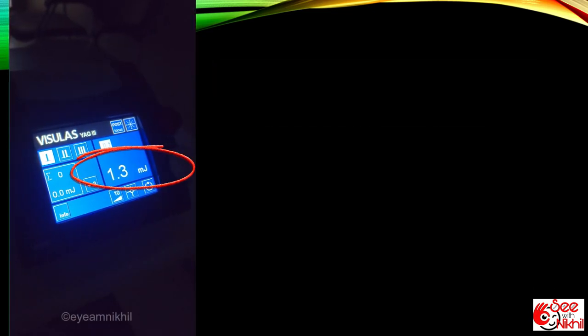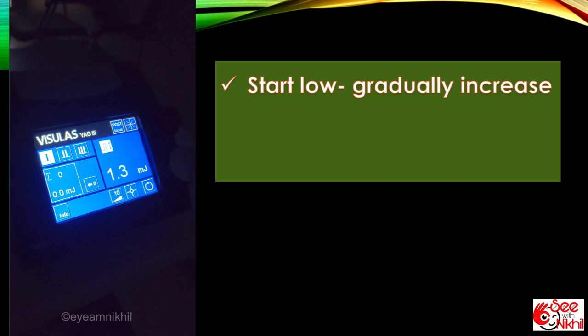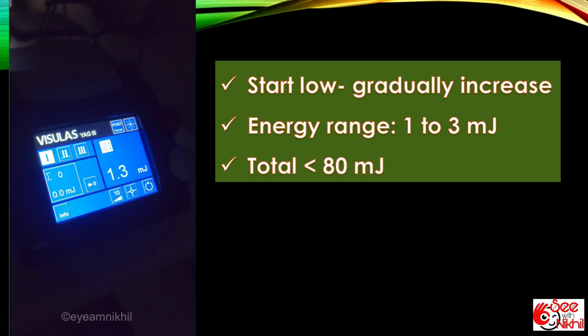Energy is kept at around 1 millijoule. Start with low energy and gradually increase if necessary. The idea is to use the lowest amount of energy required to create an opening. Usual range is from 1 to 3 millijoule depending upon thickness of PCO. We try to keep the total energy applied to less than 80 millijoule.